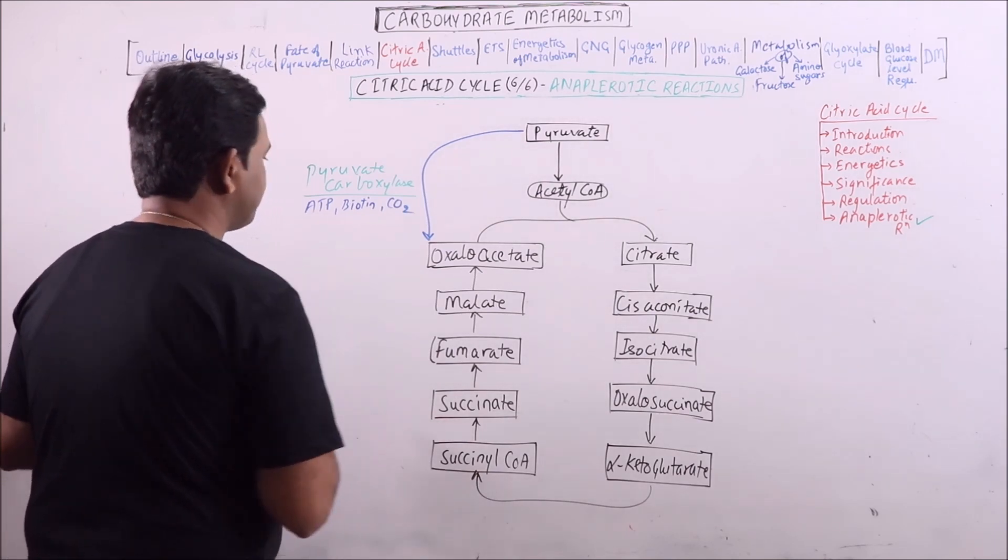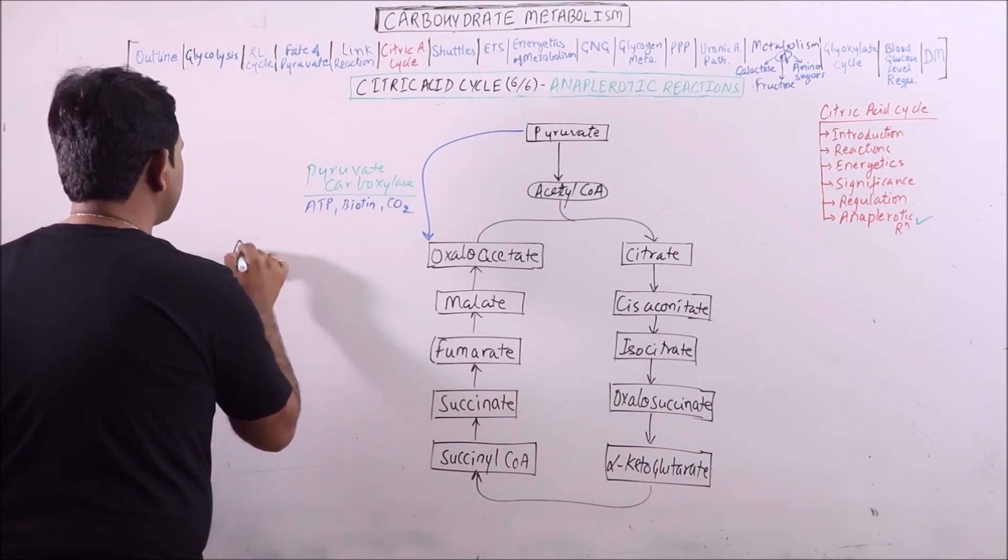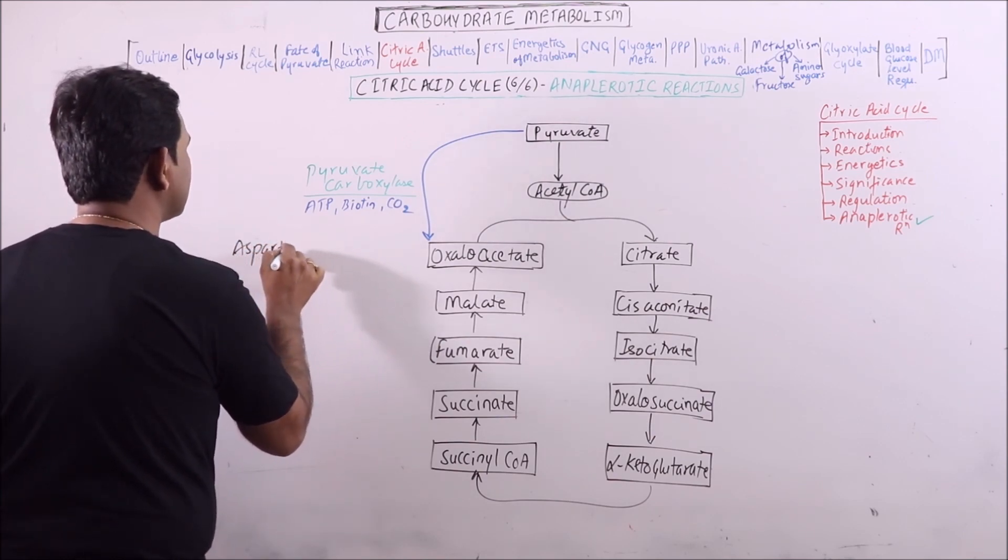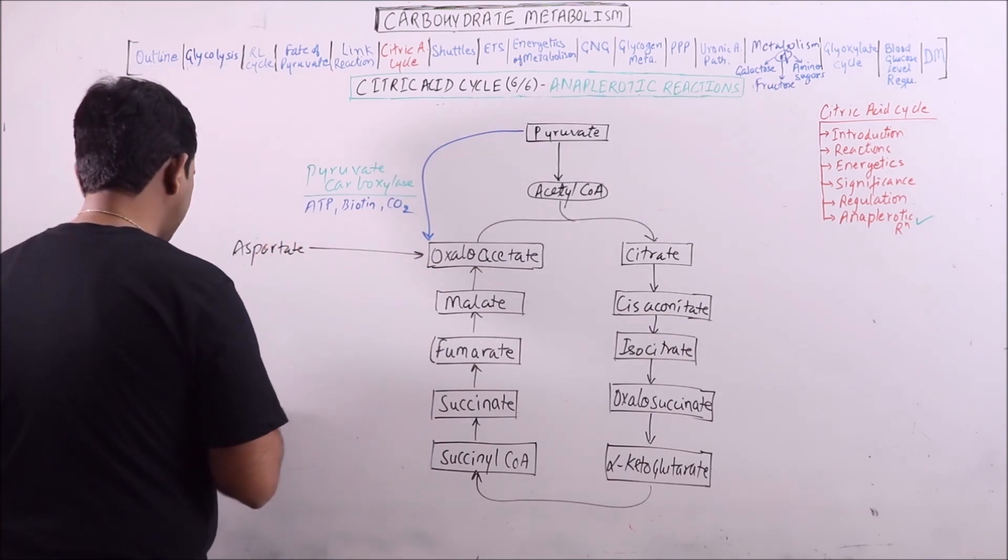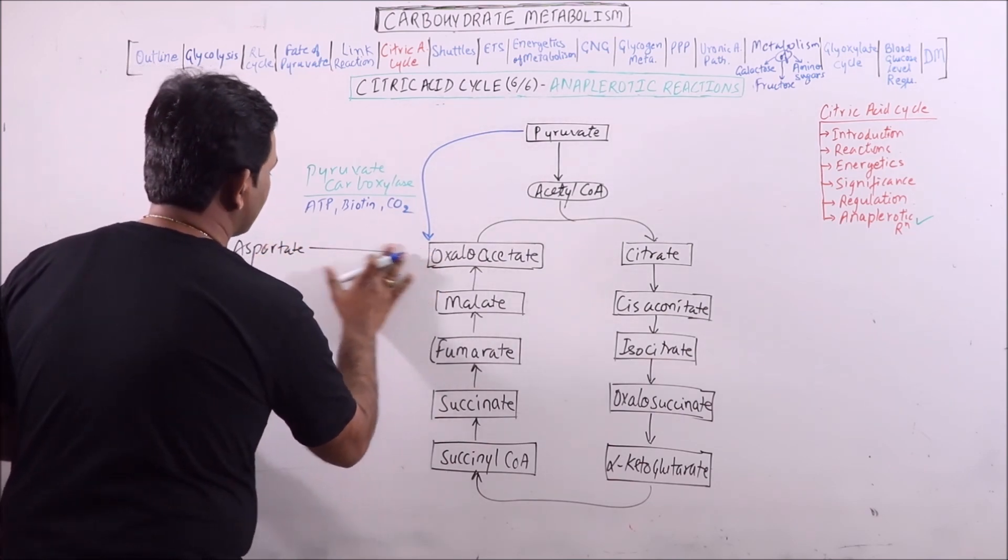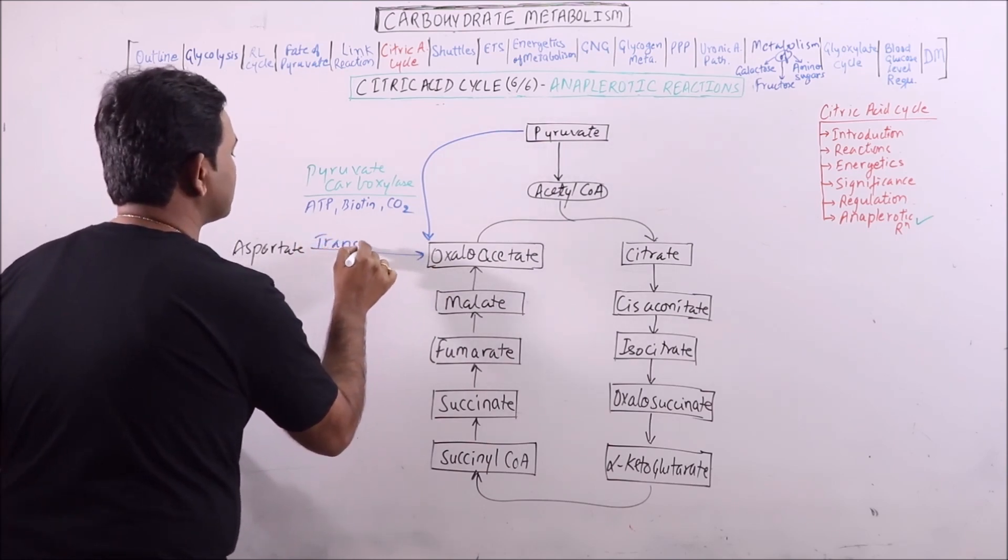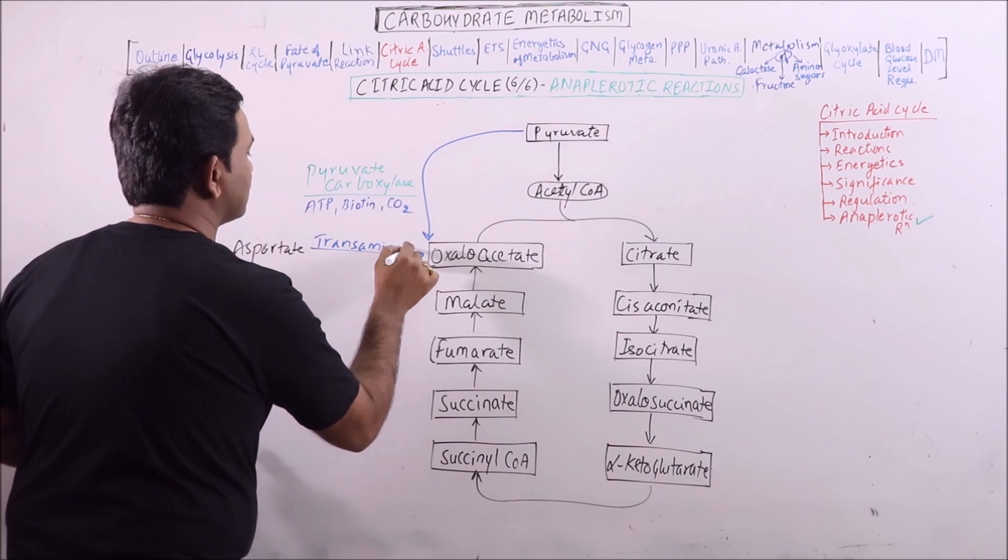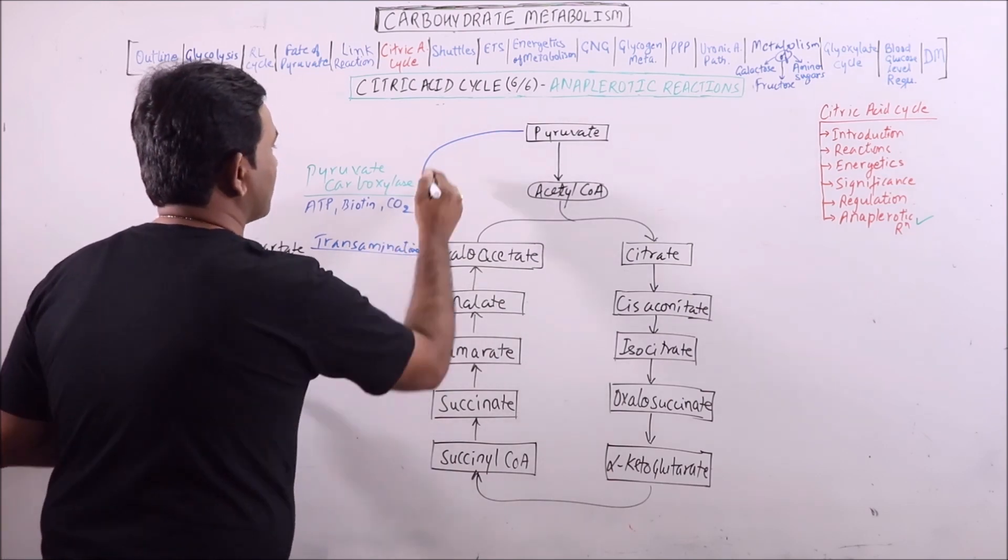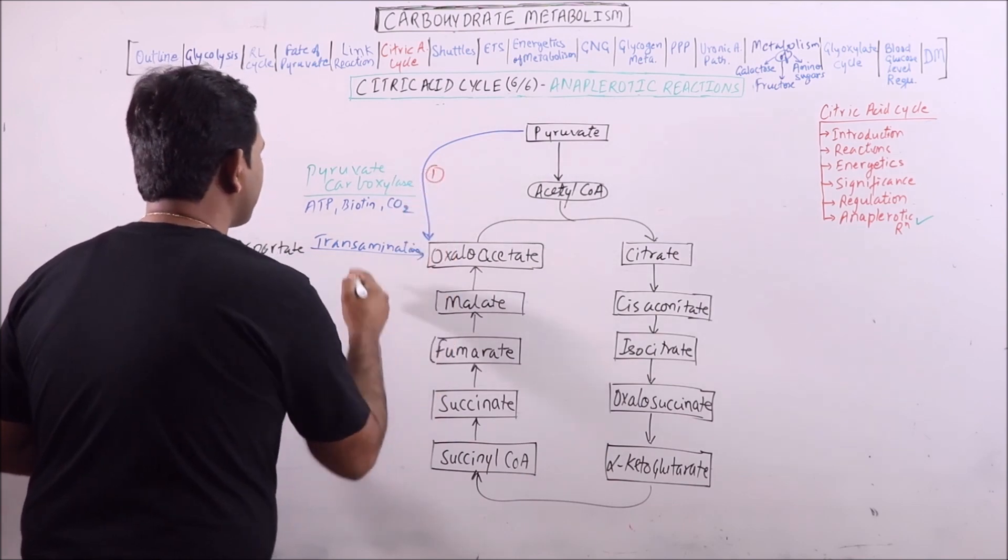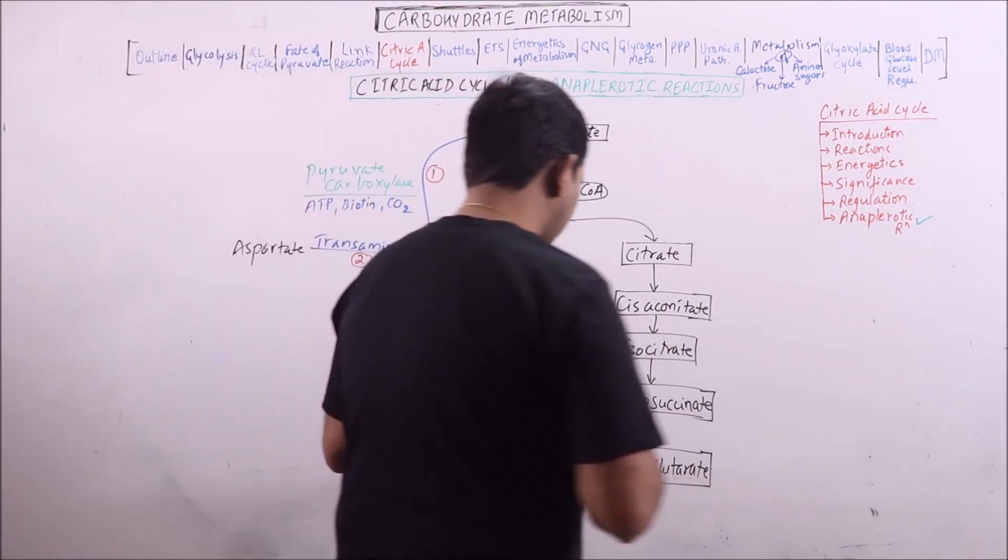Another component which can be converted to oxaloacetate is aspartate. Aspartate can be converted to oxaloacetate by transamination. This is a very important step for formation of oxaloacetate.